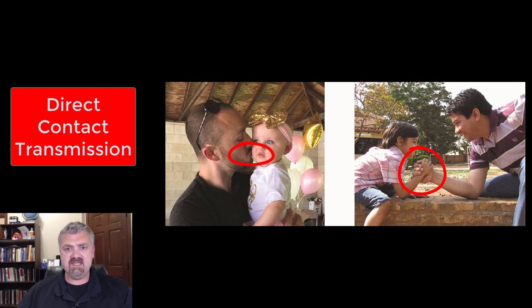So here we see direct contact transmission. You see somebody kissing a baby, you see people touching hands. Obviously those are great, very important things. I hold my son's hand every day, I kiss him every day, but these are great ways for microbes and pathogens to be spread. So that's direct contact transmission.